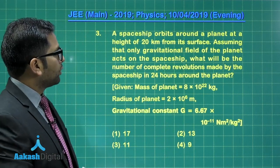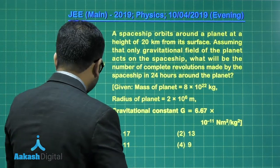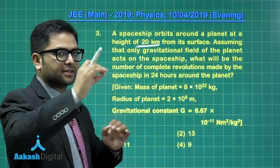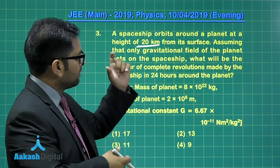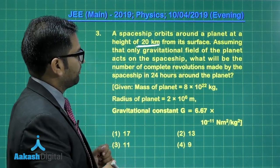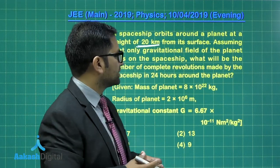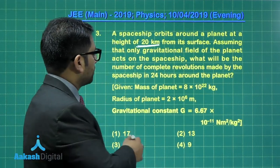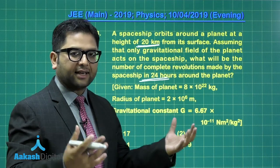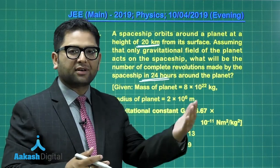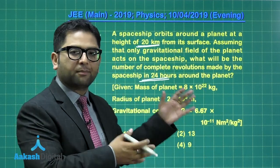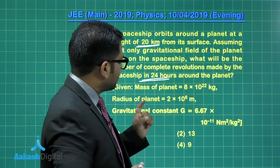So here it is: a spaceship orbits around a planet at a height of 20 km from its surface. The distance from the center is, of course, the radius of the planet plus the height. Assuming that only the gravitational field of the planet acts on the spaceship, what will be the number of complete revolutions made by the spaceship in 24 hours? The idea would be to calculate the time period. That time period would be the time taken for one complete revolution. And 24 hours divided by the time period is going to give the required parameter.